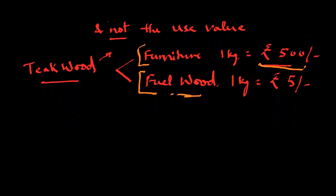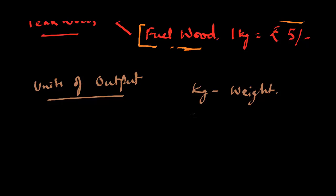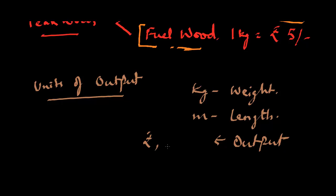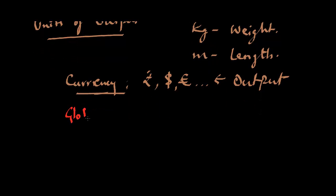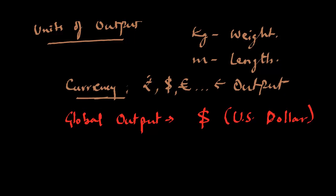Now let's see what are the units of output. Just as we have kilograms for weight or meters for length, similarly for output we have currency values like rupees, dollar, or euro. It is the currency of the economy for which the GDP is being calculated. For global output, we presently use the US dollar as the unit.